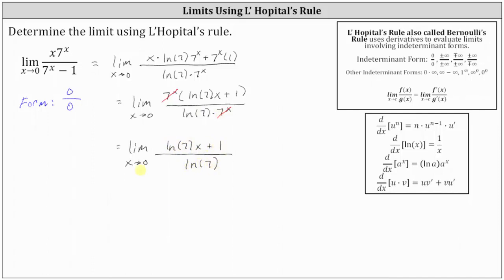Now we can determine the limit by performing direct substitution. Natural log seven times zero is zero, leaving us with just one divided by natural log seven as the exact value of the limit.